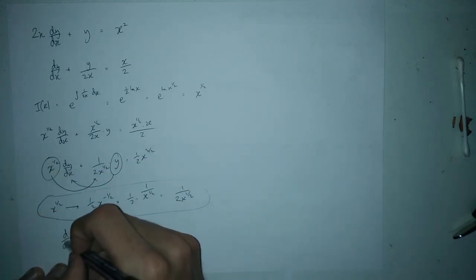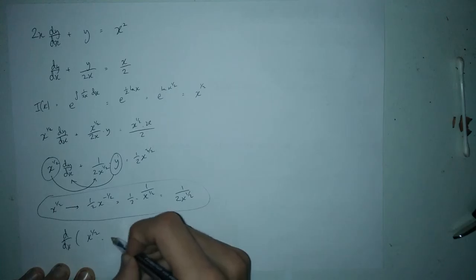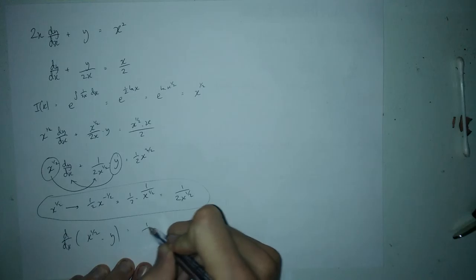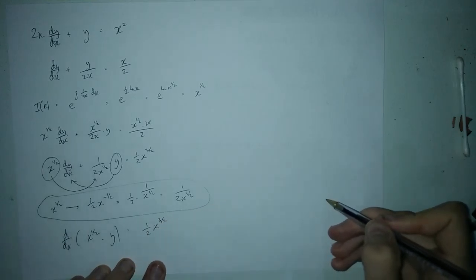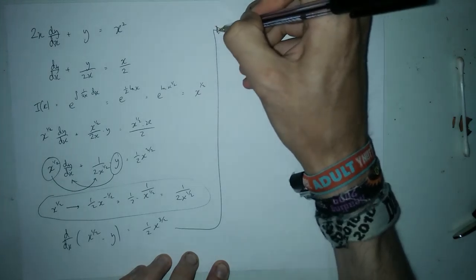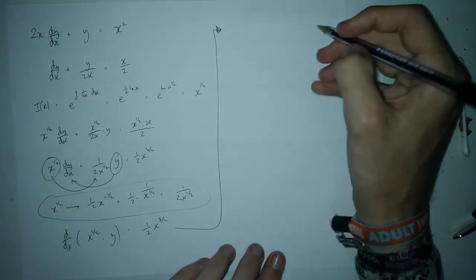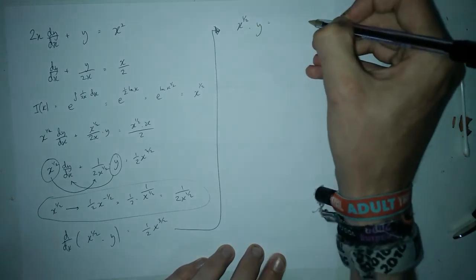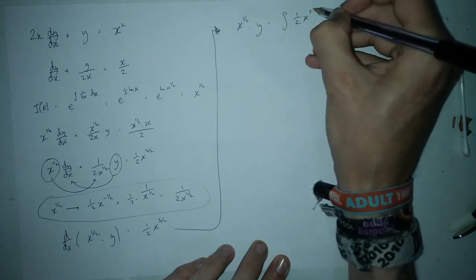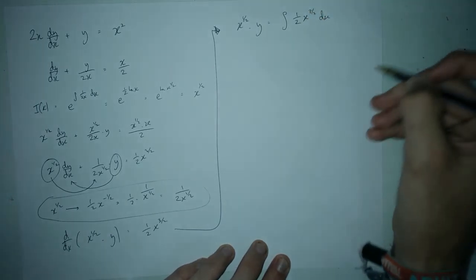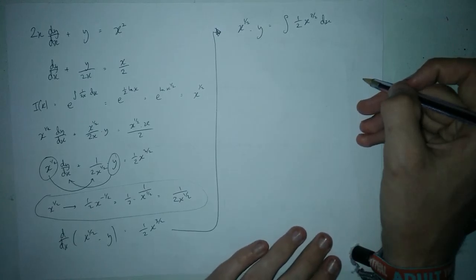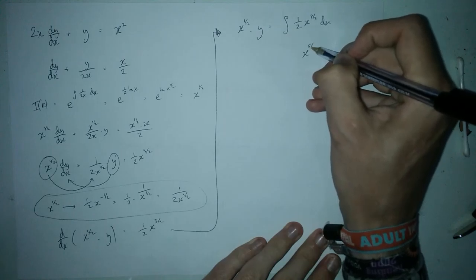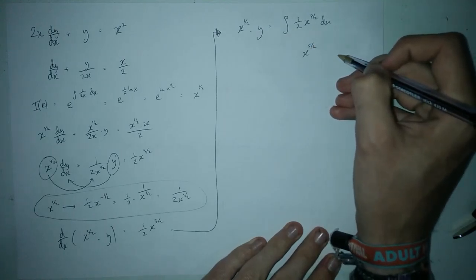We can now write the left side as d/dx of (x^(1/2) · y), and on the right we have (1/2)x^(3/2). Integrating both sides: the dx disappears on the left, and on the right we integrate (1/2)x^(3/2), increasing the power by one gives x^(5/2), divided by 5/2, which means multiplying by 2/5.